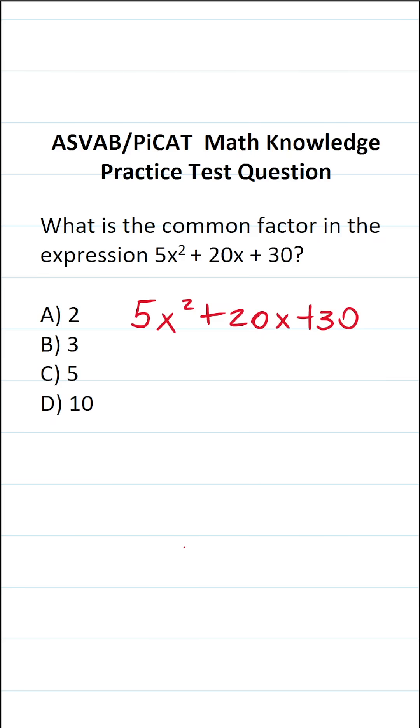So we're just looking for the common factor. In each of these terms, we have 5x squared, 20x, and 30. Immediately, you should recognize that 5 goes into 5x squared, 20x, and 30.